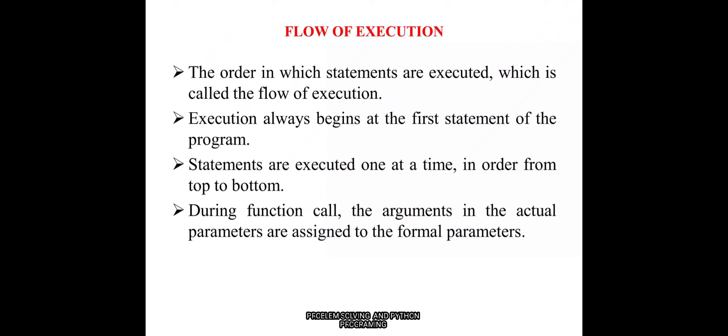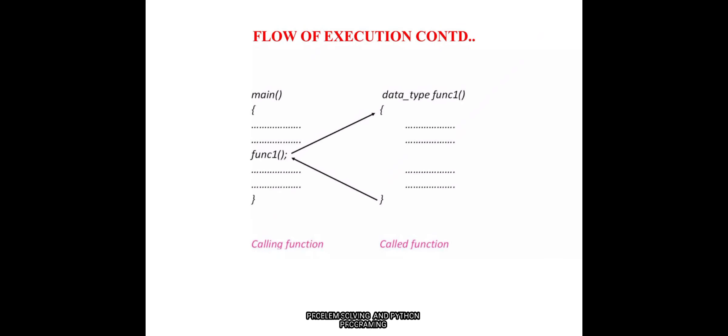The next topic is the flow of execution. When executing a function, execution always begins at the first statement of the program. Statements are executed one at a time — in Python's interpreted mode, only one statement executes at a time. During a function call, the arguments are assigned to the corresponding parameters. The function that makes the call is called the calling function, and the function which is being called is called the called function.